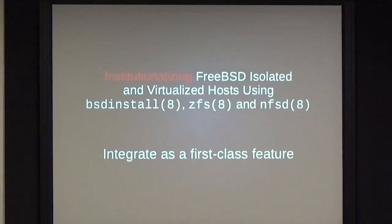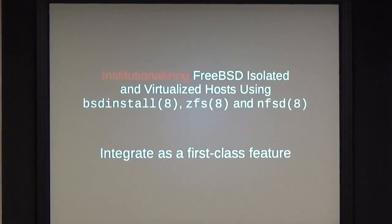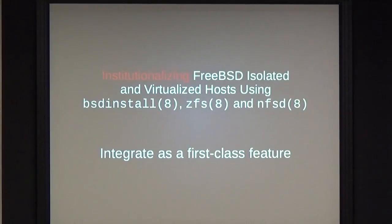FreeBSD has had jails since the year 2000 and bhyve since 2014. Those have played an important role in the OS and the surrounding tools. But I personally do not believe they are yet integrated into the OS for effortless use in all opportunities. When you have an operating system with integrated containment and isolation tools, how do we remove barriers between subsystems and users?